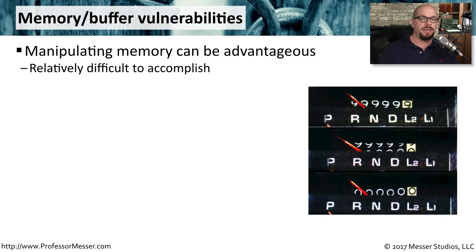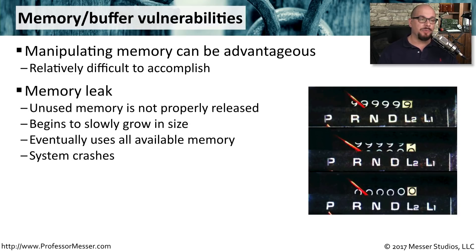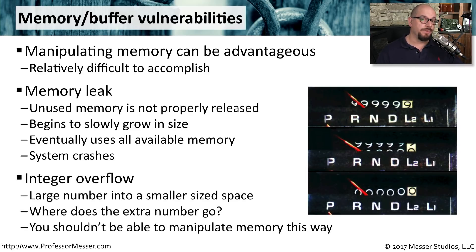The applications we use are executing in memory, so if we can manipulate the memory, we should be able to manipulate the application. One type of memory vulnerability is a memory leak. This is when memory is allocated during the execution of a program and is never unallocated when it's finished being used. As you use more and more of the application, you continue to use more and more memory — it slowly grows and uses up all available memory, ultimately crashing the application or the computer it's running on. Another type is an integer overflow, which is when you're trying to put a very large number into a place that has a very small allocated area. The question then is what happens to that extra number and how does it affect the execution of that application?